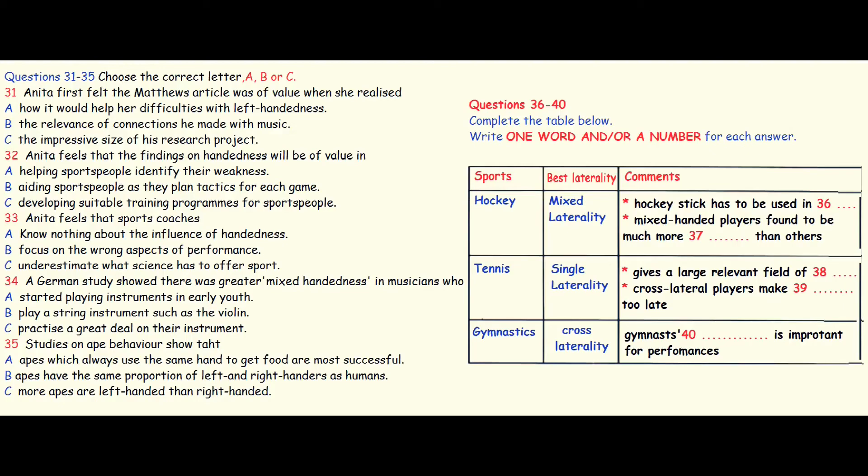Single: you tend to favor one side, but both hand and eye favor the same side. And cross-laterality: a player's hands and eyes favor only one side, but they are opposite sides. Let's start with hockey. Matthews found that it was best to be mixed-handed.